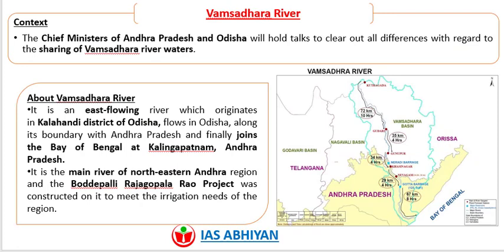The next important article is on Vamsadhara River. The Chief Ministers of Andhra Pradesh and Odisha will hold talks to clear out all differences with regard to the setting of the Vamsadhara River water dispute. Vamsadhara River is an east-flowing river which originates in the Kalahandi district of Odisha, flows along its boundary with Andhra Pradesh, and finally joins the Bay of Bengal at Kalingapatnam, Andhra Pradesh. It is the main river of the northeastern Andhra region, and the Bodhipali Rajagopala Rao Project was constructed on it to meet the irrigation needs of the region.